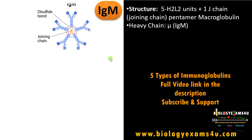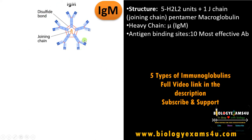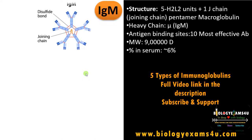As IgM is a pentamer, it has 10 antigen-binding sites, making it the most effective immunoglobulin. Its molecular weight is approximately 900,000 Daltons, and it accounts for nearly six percent of serum immunoglobulins. IgM cannot cross the placenta — the only antibody that can cross the placenta is IgG.